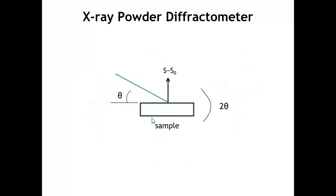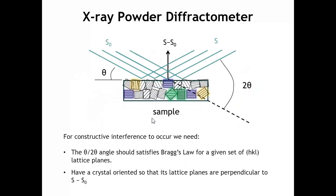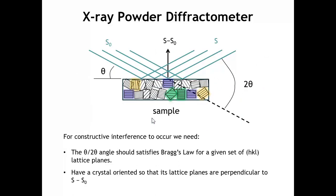If we look a little bit closer at what conditions lead to diffraction, we would see that we have to meet two conditions. First of all, the angle theta and 2 theta have to be the right angle so we can get constructive interference from specific Bragg planes in our crystal. Those Bragg planes will have a specific spacing, and that specifies the angle.